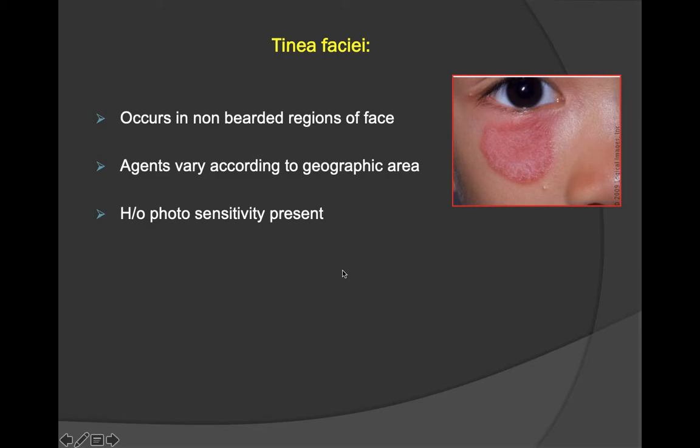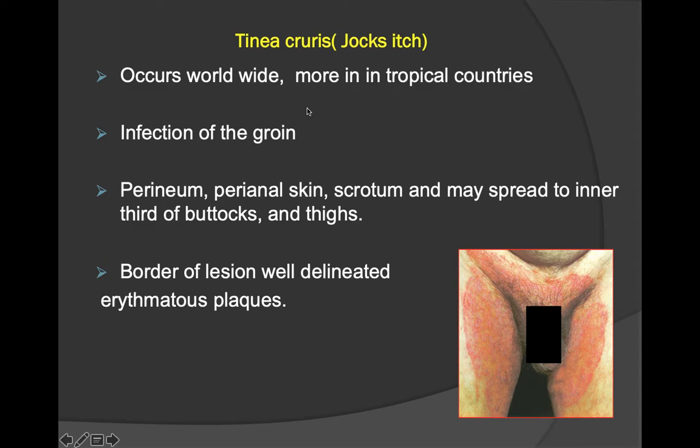Tinea cruris, or jock itch, occurs worldwide and more commonly in tropical countries. It involves infection of the groin, perineum, perianal skin, and scrotum, and may spread to the inner third of the buttocks and thighs. The borders of lesions are well-delineated.